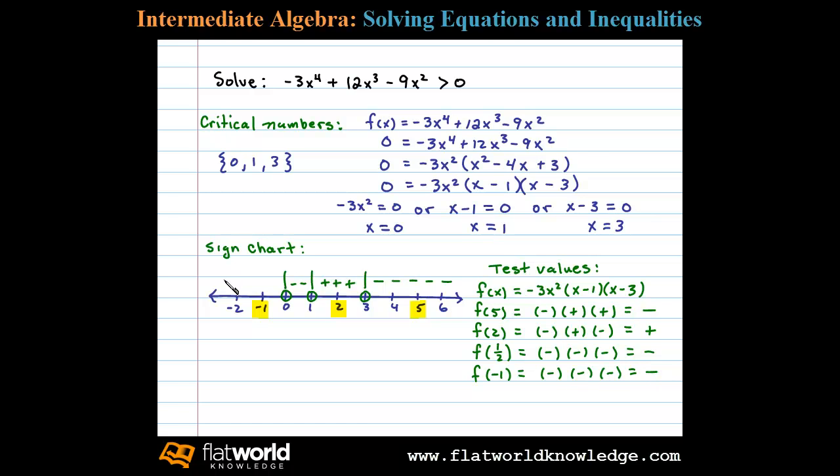Once we complete the sign chart, we can next use it to answer the question. In this case, we're asked to find the x values for which this polynomial is greater than 0. In other words, where is it positive?